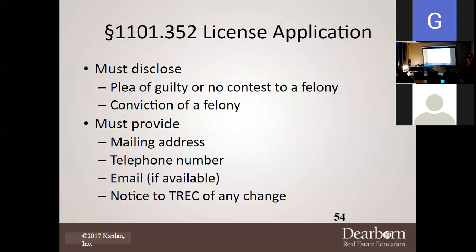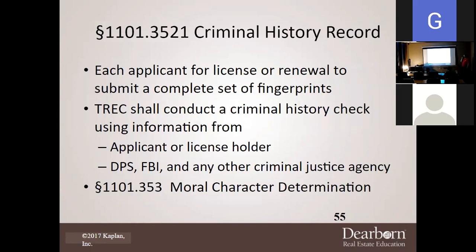On the license application, you must disclose if you had any guilty plea or no-contest plea to a felony, or were convicted of a felony — no way around it. You must provide: mailing address, telephone number, and email if you have it. Get your email address in there because this is how they'll email you your license; otherwise you have to wait for snail mail. You must also notify TREC of any changes, normally within 10 days. Every applicant for a license or renewal must submit a complete set of fingerprints electronically — no more rolling fingers in ink, just an electronic device.